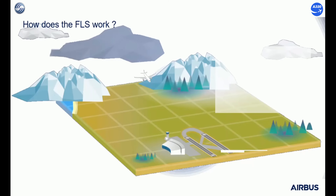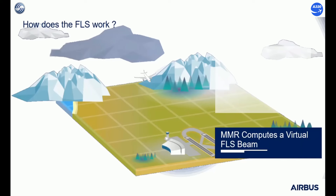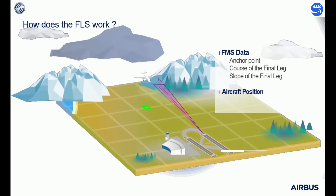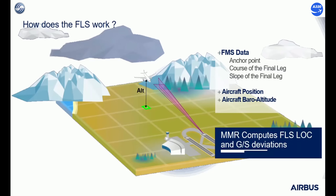How does the FLS work? The multi-mode receiver, MMR, computes a virtual FLS beam based on the following FMS data: the anchor point, the course of the final leg, and the slope of the final leg. The anchor point is the endpoint of the final leg — usually, it is the runway threshold. Based on the aircraft position and barometric altitude, the MMR computes the aircraft deviation from the FLS beam: the localizer deviation and the glide slope deviation.